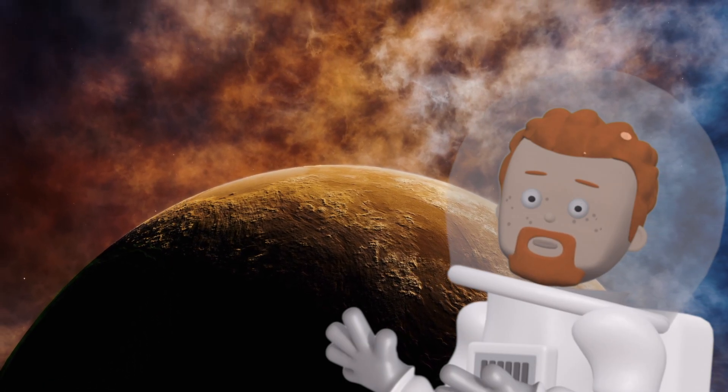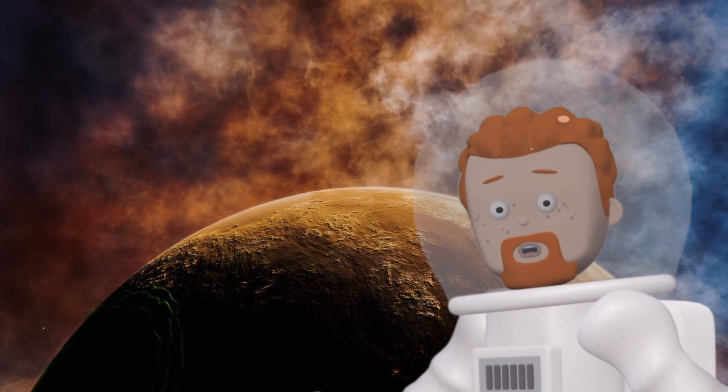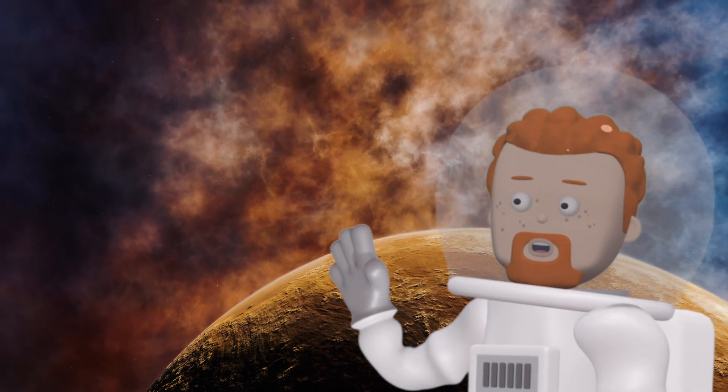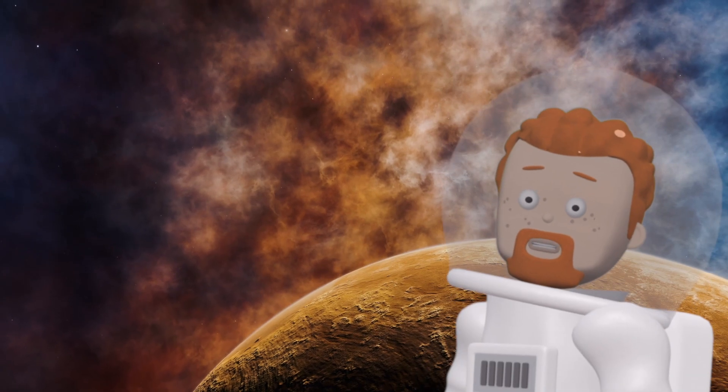Look at all those craters. Mercury is covered in them because it doesn't have an atmosphere to protect it from space rocks. And guess what? During the day, it can get as hot as 800 degrees Fahrenheit.